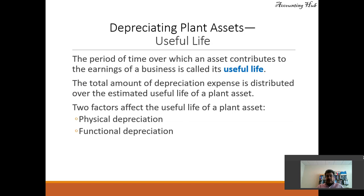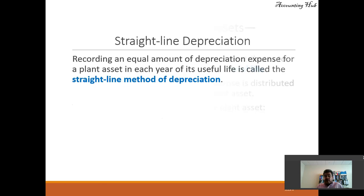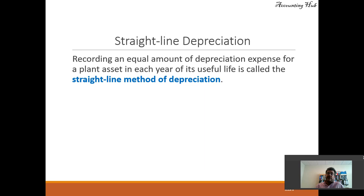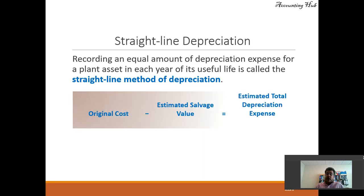Two factors affect useful life: physical depreciation and functional depreciation. We will be working with a method called straight-line depreciation. That is not the only method — we have several others — but it is one of the most commonly used, especially for small businesses, because we record an equal amount of depreciation expense for a plant asset in each year of its useful life.